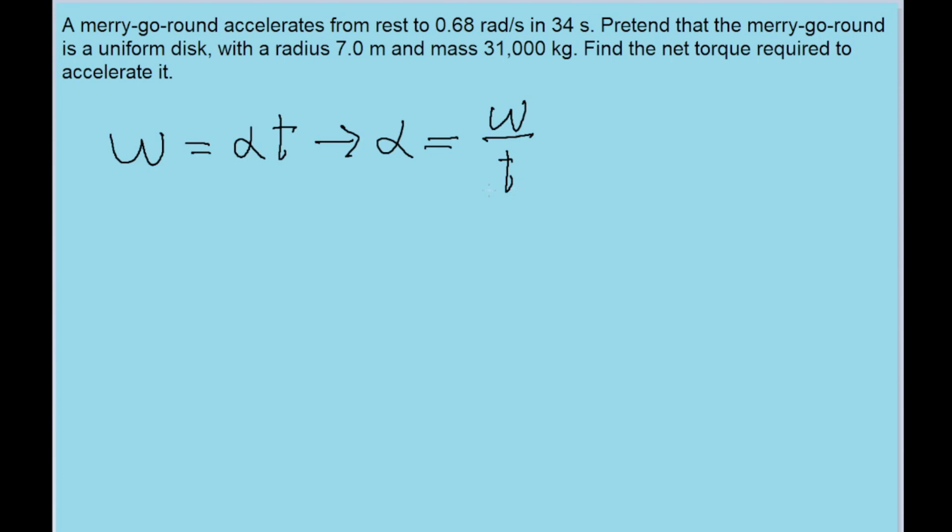Now using that information, if we want to find the net torque required to reach that acceleration, we'll just use the torque equation that states that torque is equal to the moment of inertia of the object I times the angular acceleration. Now you can look it up and the moment of inertia for a disk is equal to half of the mass of the disk times the disk's radius squared.